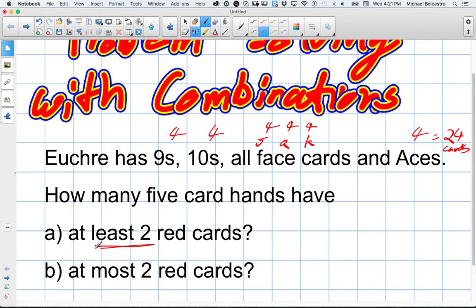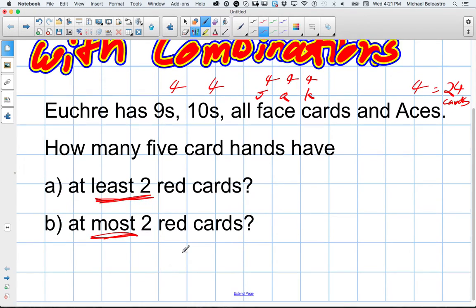And we need to figure out at least two. So this at least and at most are actually really important. And the fact that it's red cards. There's actually 12 red cards and 12 black cards.